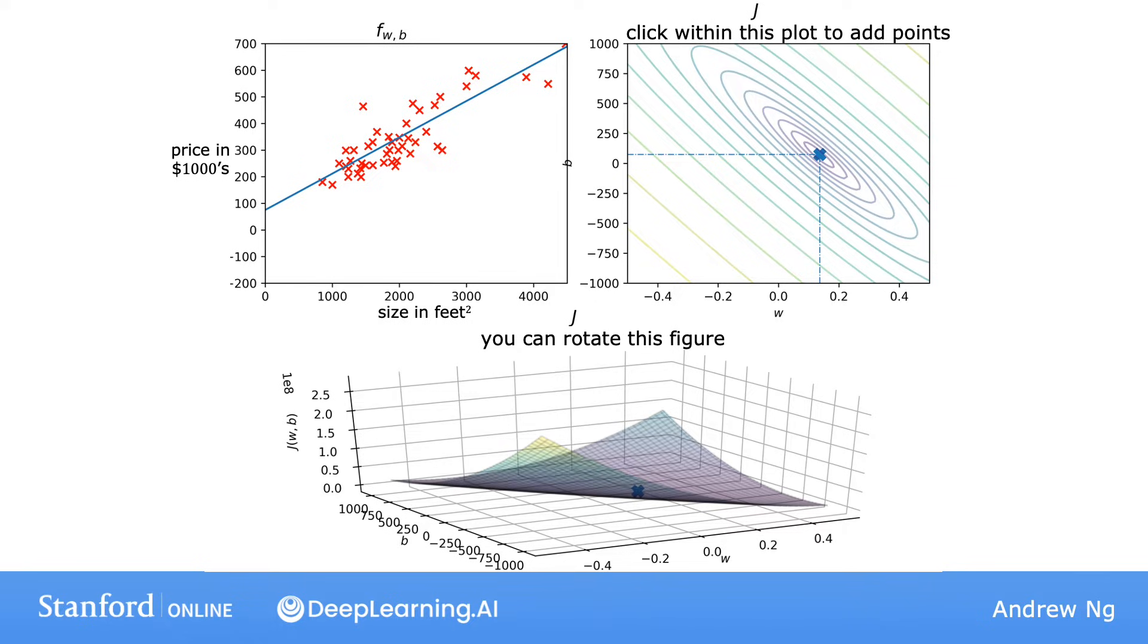Last example. If you look at f of x on the left, this looks like a pretty good fit to the training set. You can see on the right, this point representing the cost is very close to the center of the small ellipse. It's not quite exactly the minimum, but it's pretty close. For this value of W and B, you get this line f of x. You can see that if you measure the vertical distances between the data points and the predicted values on the straight line, you get the error for each data point. The sum of squared errors for all of these data points is pretty close to the minimum possible sum of squared errors among all possible straight line fits.